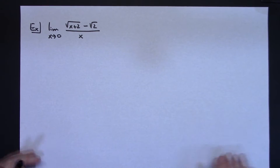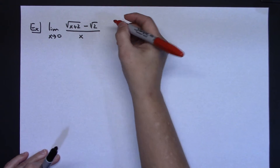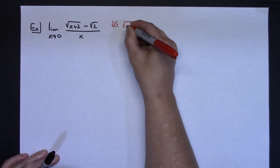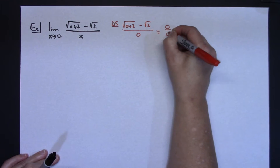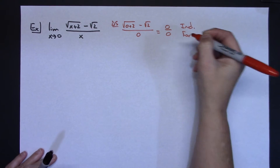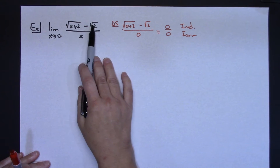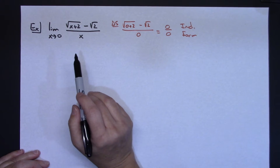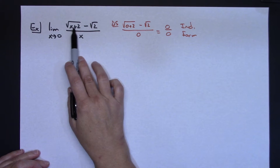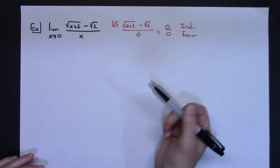Now for one more example: the limit as x approaches 0 of the square root of x plus 2 minus the square root of 2, all over x. Starting with direct substitution, plugging 0 in gives square root of 2 minus square root of 2 over 0, which is 0 over 0 — again the indeterminate form, so do more work. Looking at the numerator, it has square roots, which means I'm going to rationalize the numerator to get rid of those square roots and make it simpler.